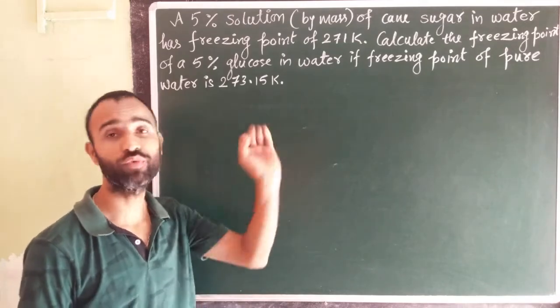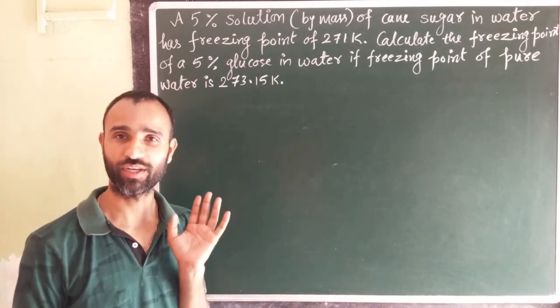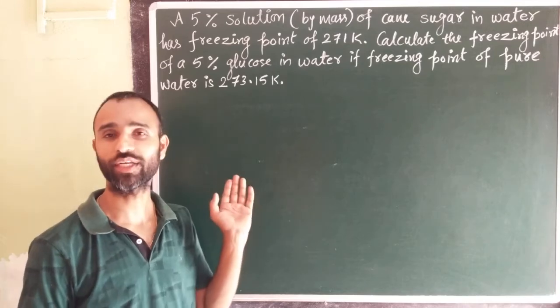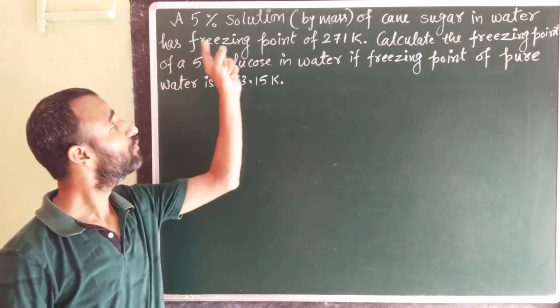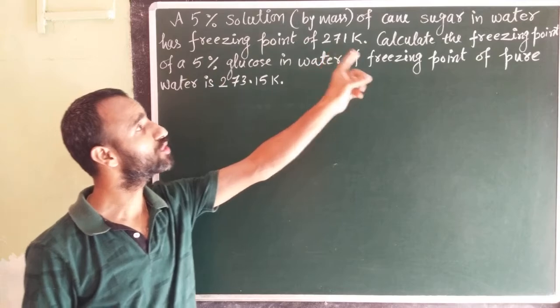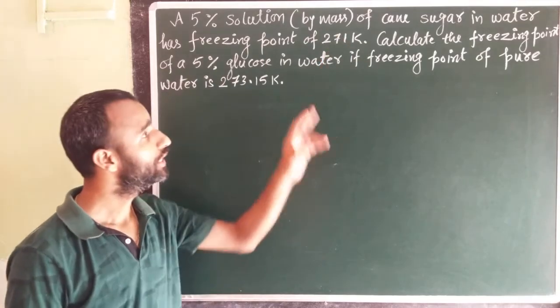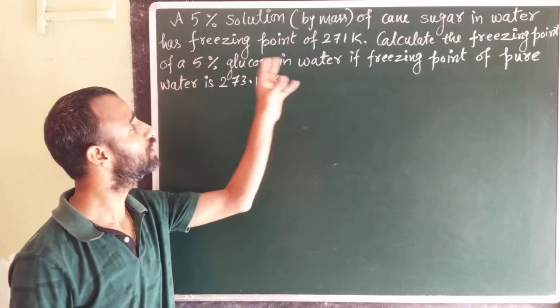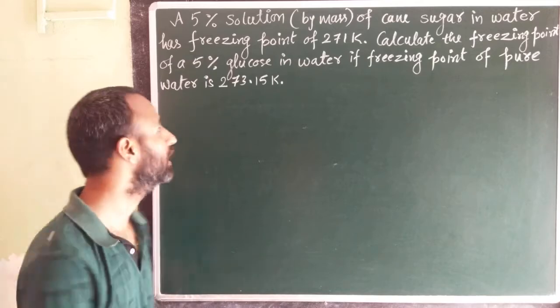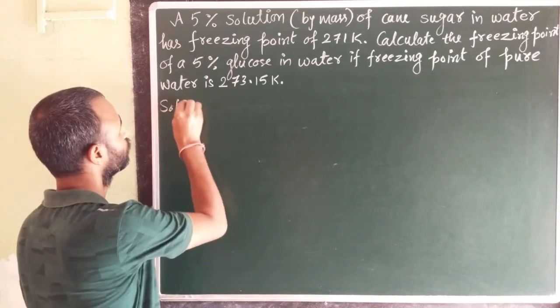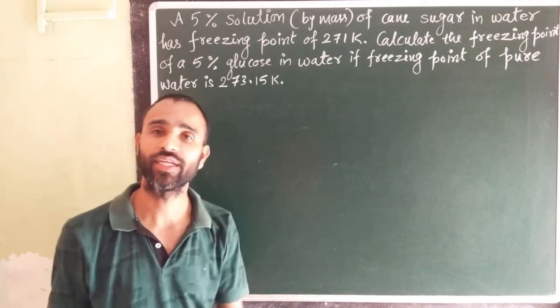Just look at it - we have a 5% solution by mass of cane sugar in water with freezing point of 271K. So from the statement it is clear that it is related to freezing point.